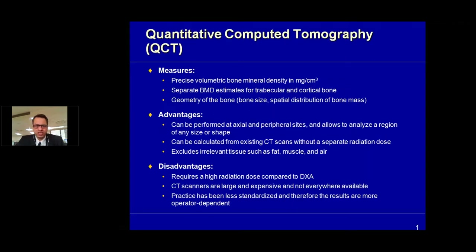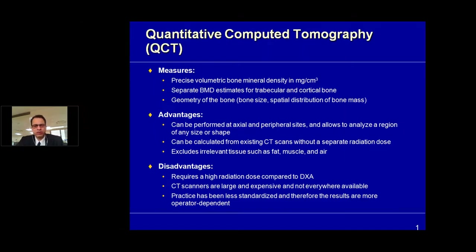Quantitative CT is rarely used but provides a much more precise volumetric analysis of bone density in three dimensions. It can separately determine the bone density of trabecular as well as cortical bone and define the geometry. It can be performed at axial as well as peripheral sites using routine CT machines, excluding surrounding structures like fat, muscle and air. Shortcomings include higher radiation dose than DEXA, limited availability, and it is less standardized and more operator-dependent.